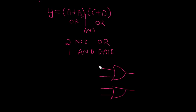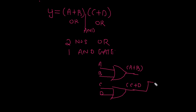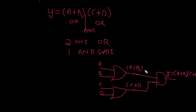Let me name the inputs: this is A, this is B, this is C, and this is D. The output of the first OR gate is A plus B, and the output of the second OR gate is C plus D. I will connect both outputs to one AND gate. The final output is y is equal to (A plus B) into (C plus D). This is the final output of our circuit diagram.